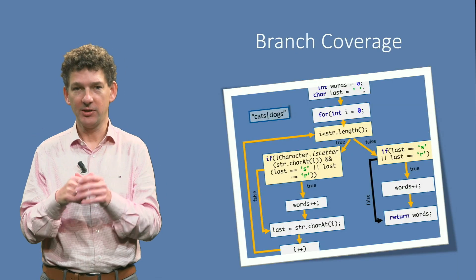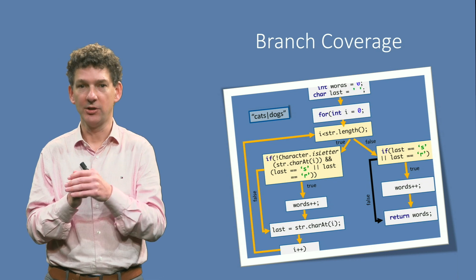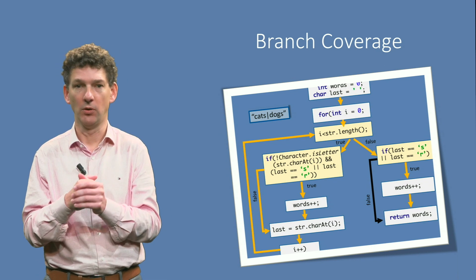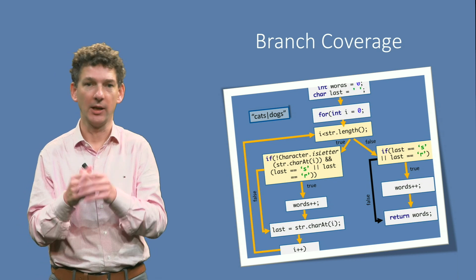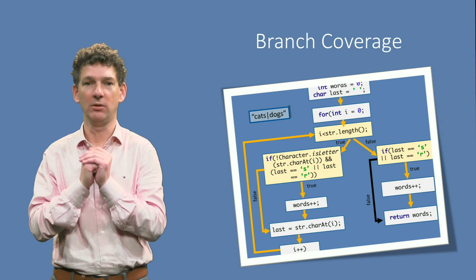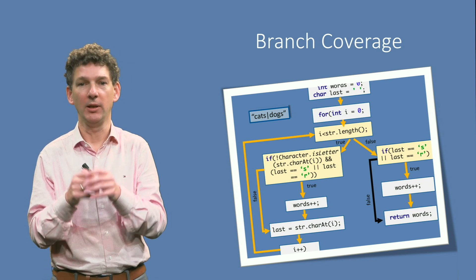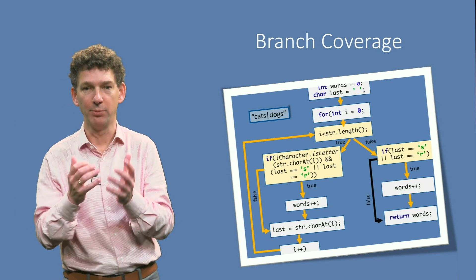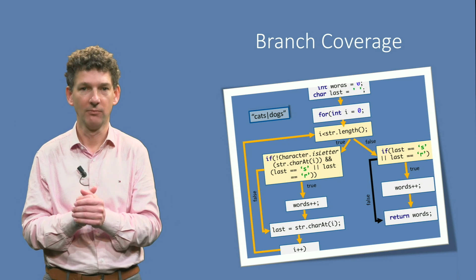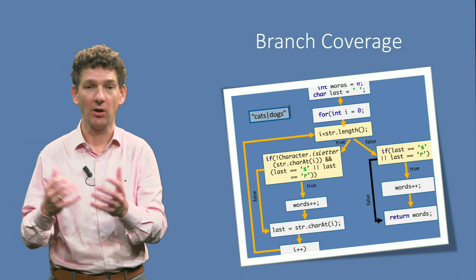The most important difference is that in structural testing the code guides the creation of test cases. The code leads to a control flow graph, shown here in a slide from our lecture on structural testing, and its branches must be covered. The scope of this is typically intra-procedural — the branches within each method must be covered — but interactions between methods are not specifically targeted.